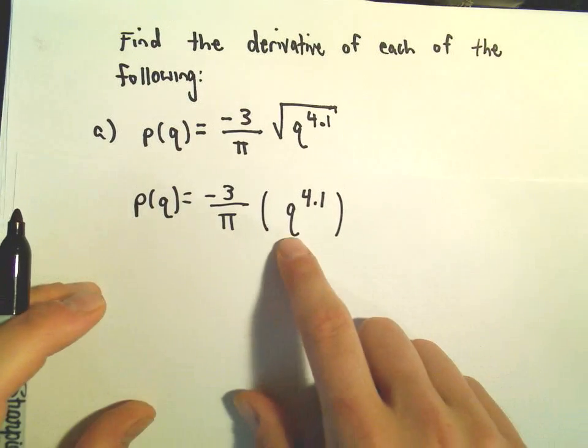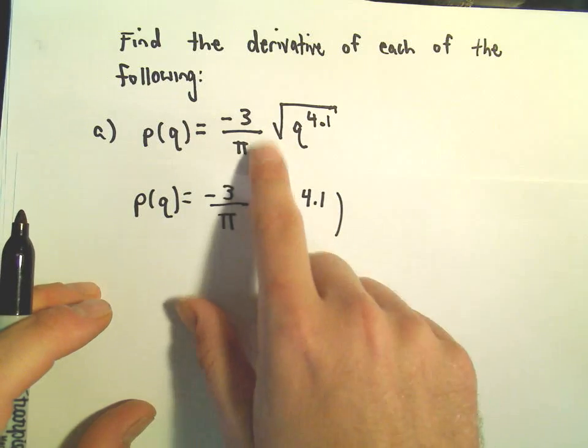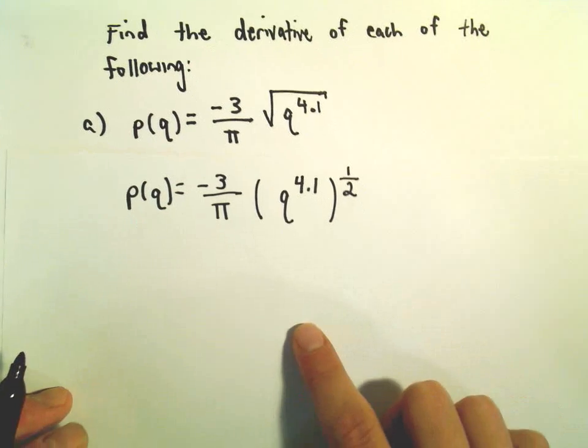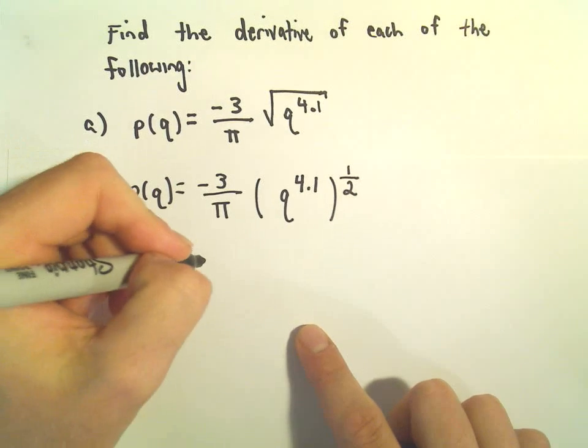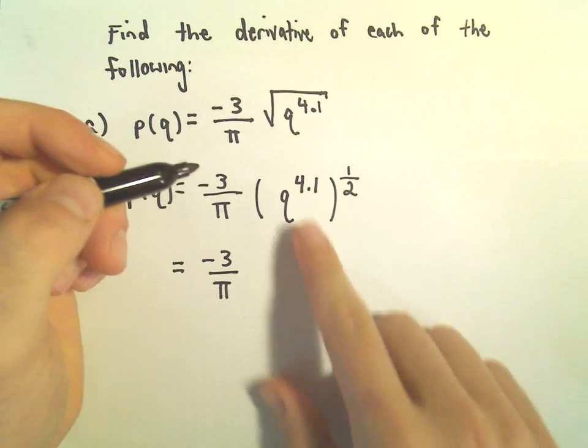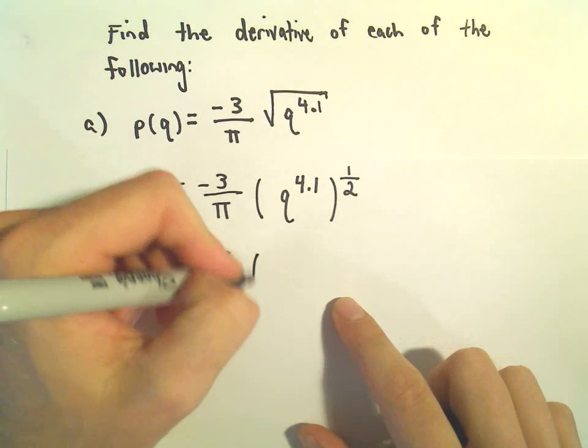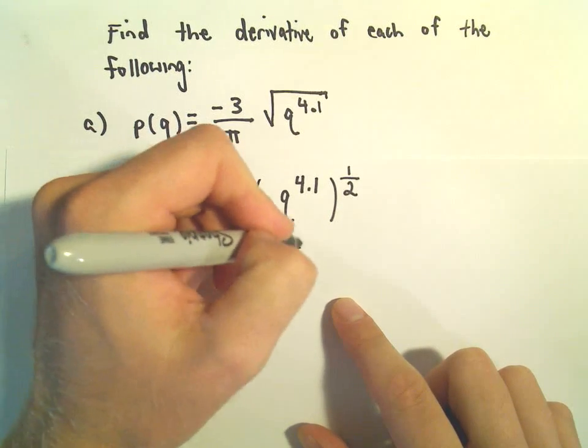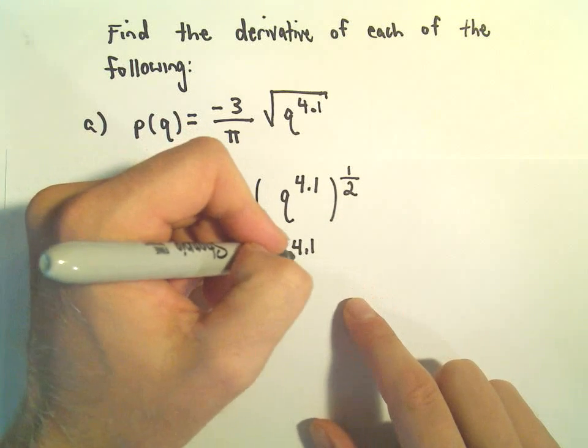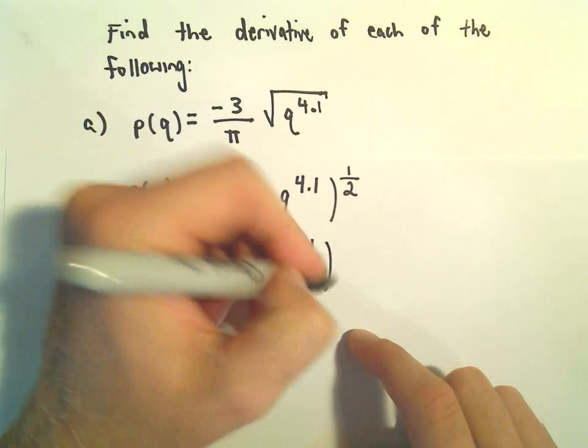So we've got Q raised to the 4.1. Recall a square root is equivalent to raising something to the 1 half power. Well, I'm just going to keep simplifying this. So we have negative 3 over pi. Recall if things are in parentheses, we just multiply the exponents. So we would have Q to the 4.1 times 1 half, or equivalently 4.1 over 2.